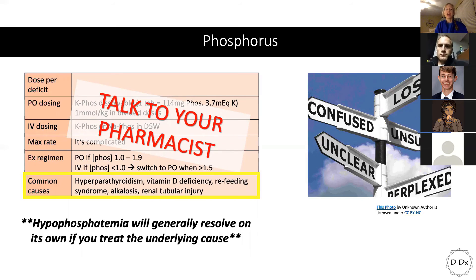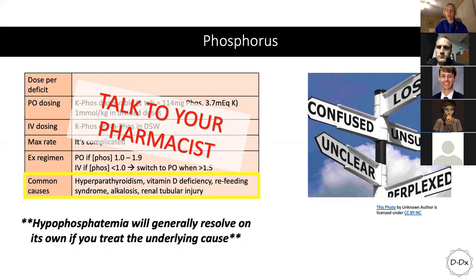Moving on to phosphorus: long story short, it's really complicated. There are many different options and it can be very confusing, so just talk to your pharmacist — they're excellent resources. The big takeaway is that hypophosphatemia will generally resolve if you treat the underlying cause. Figure out what's going on, diagnose it, address it, and the phosphorus will generally correct itself.